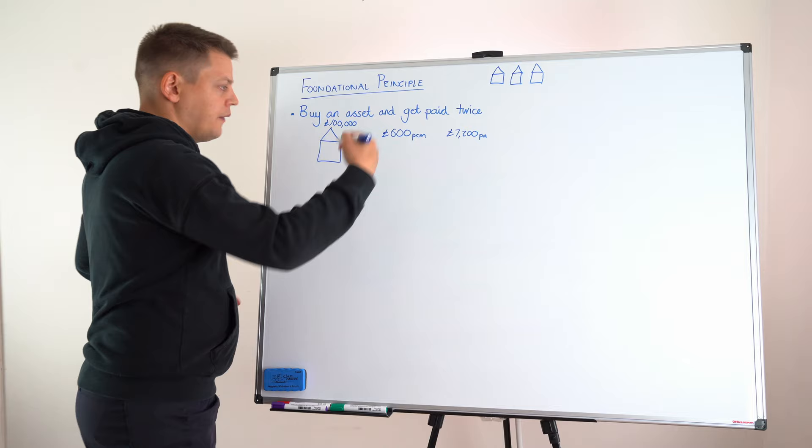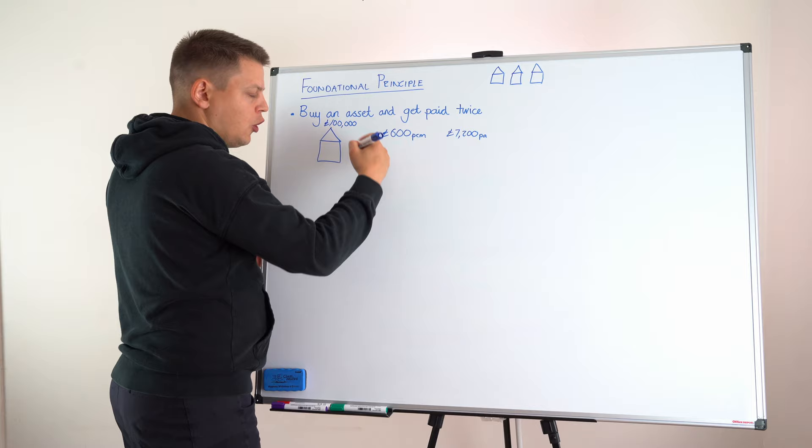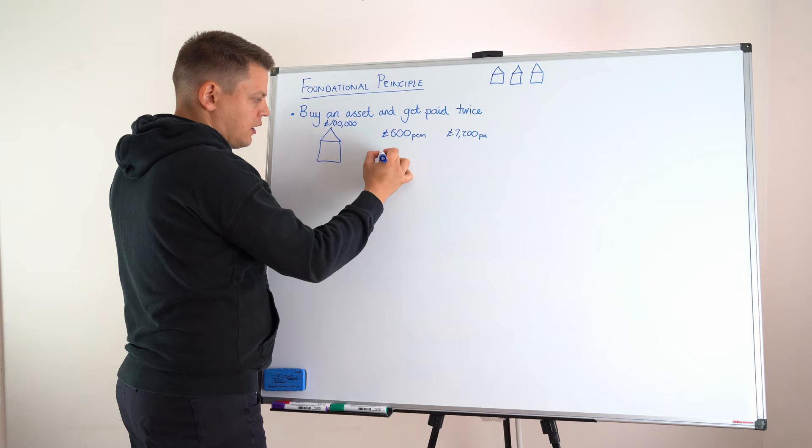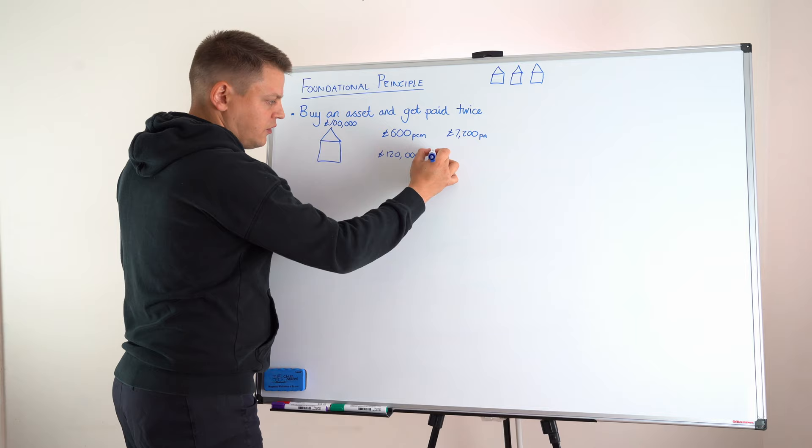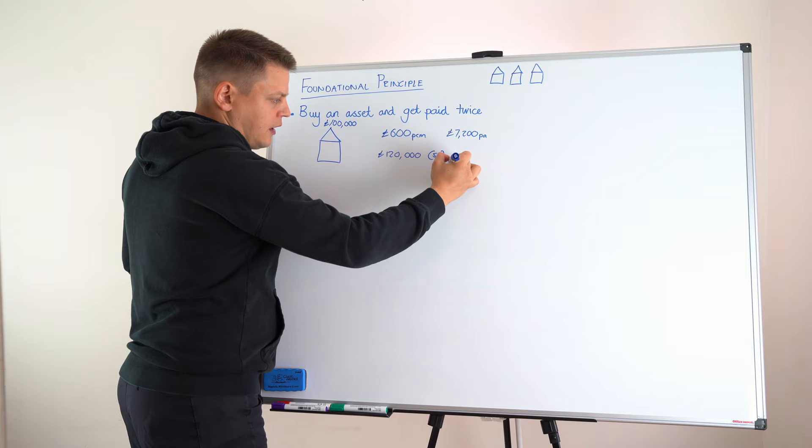And this is then where our second form of payment comes. As, over time, the property price goes up in value, it might have gone from £100,000, it now might be worth, let's say, in five years, it might be worth £120,000. And this is a five-year time frame, which means we have now got an increase of £20,000.